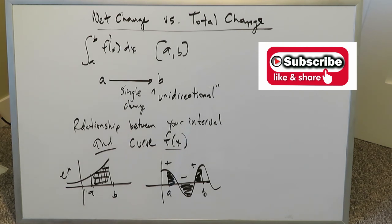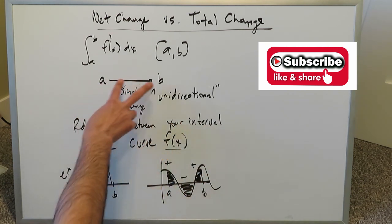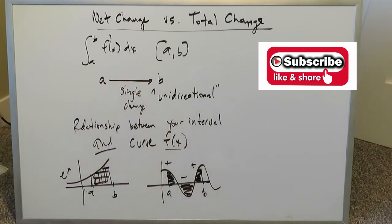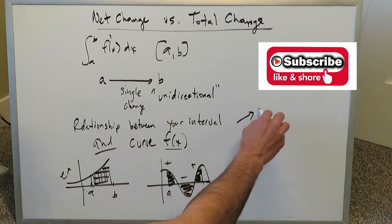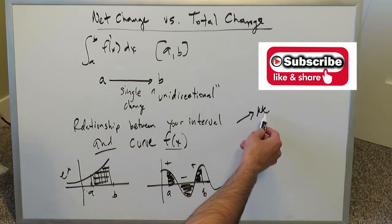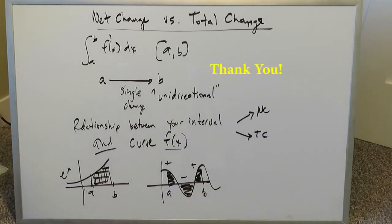These are the little things to keep aware of. Remember: the relationship between your interval and your curve defines exactly what's going on between a and b, and that relationship helps you distinguish between net change — for example, displacement — and total change — for example, the total distance an object has moved. Thank you for watching; have a nice day.